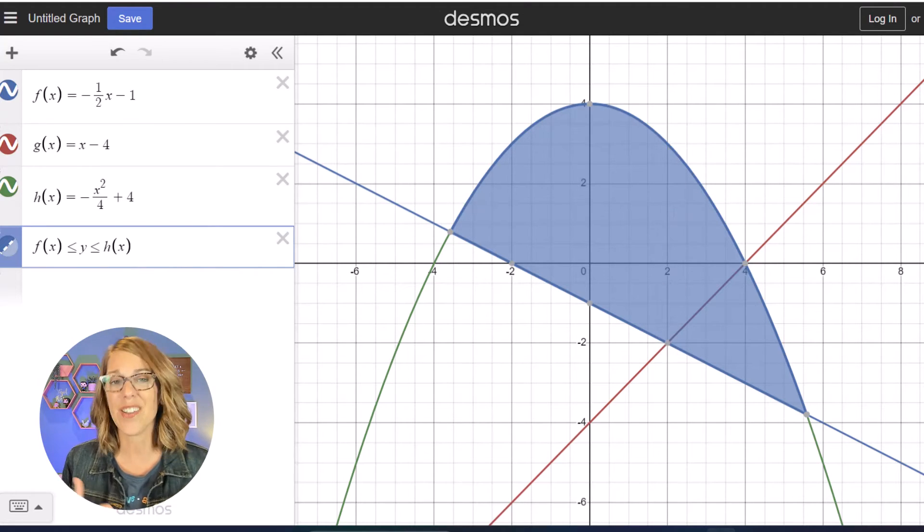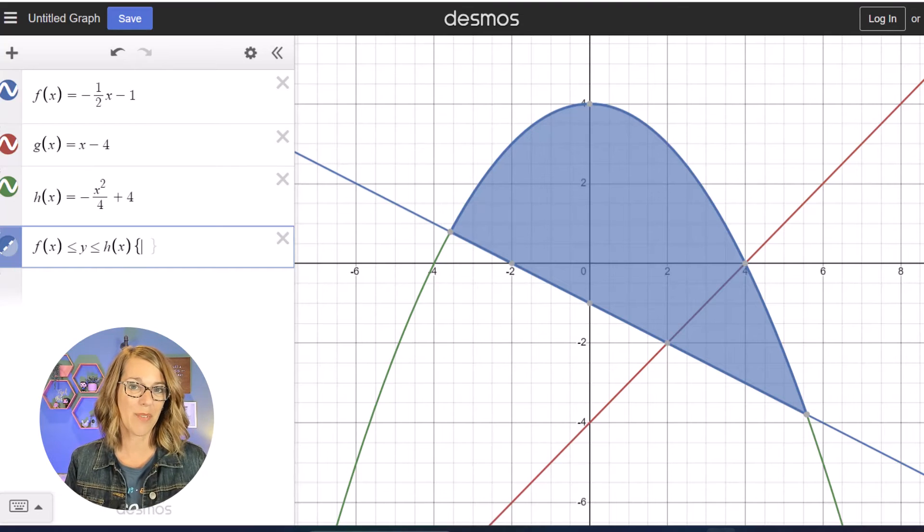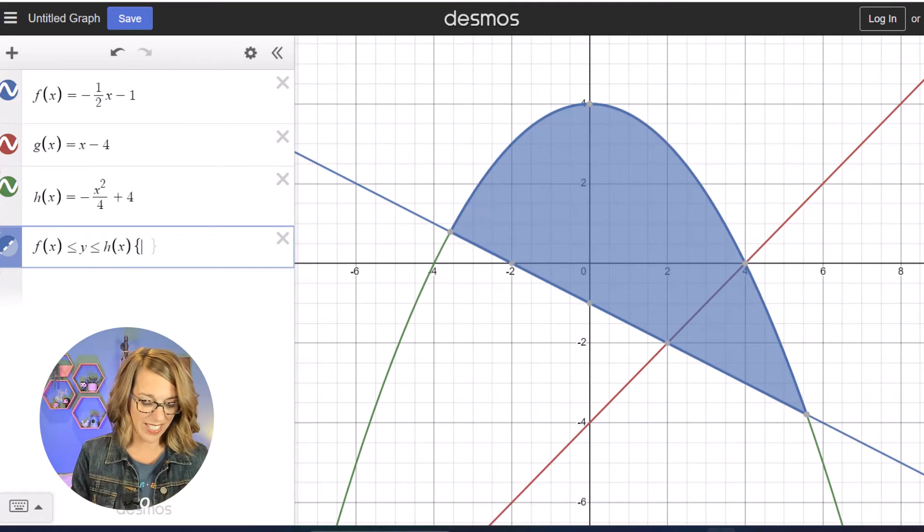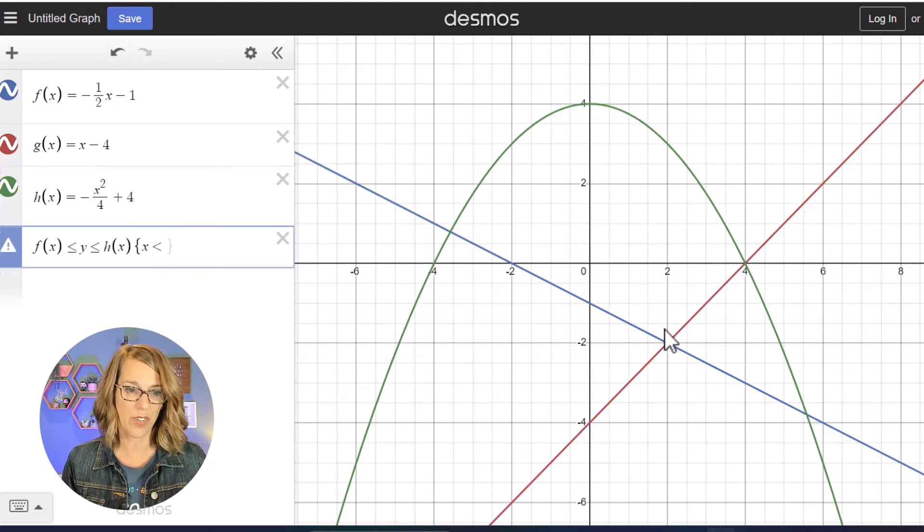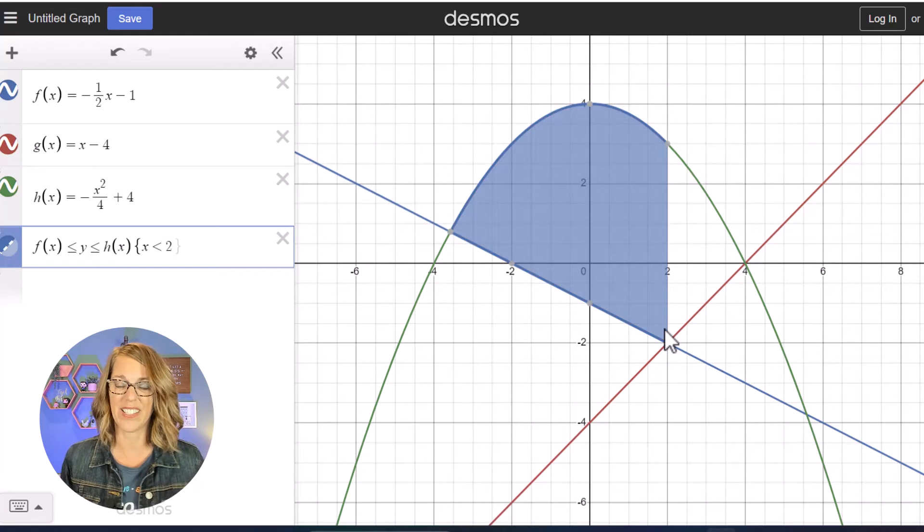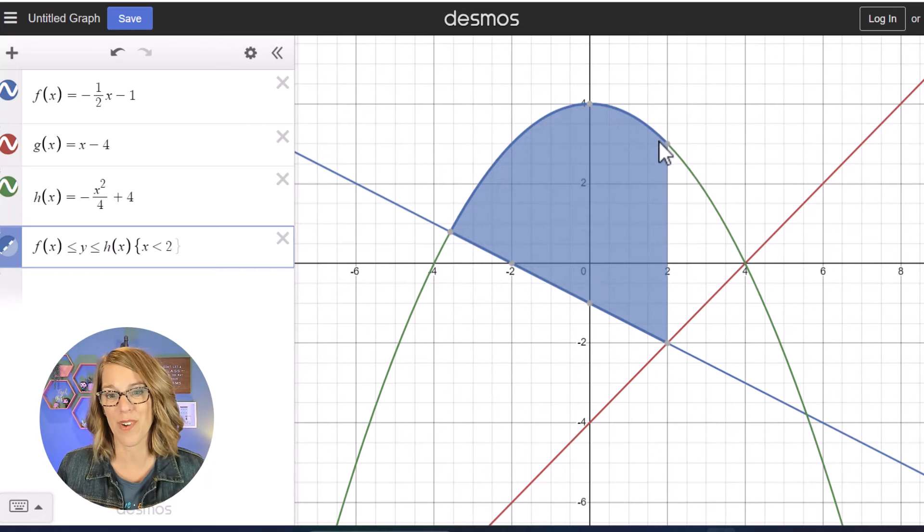Let's go ahead and add a restriction, and to add a restriction I'm gonna use my curly brackets. So shift to get that curly bracket. I want my X's to be less than that X value right here which is 2. So X to be less than 2.